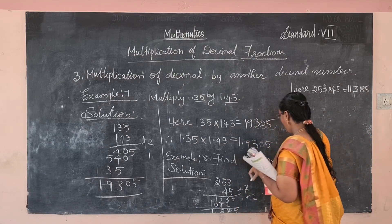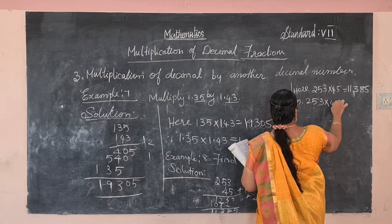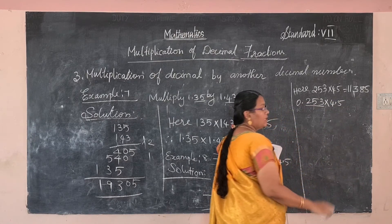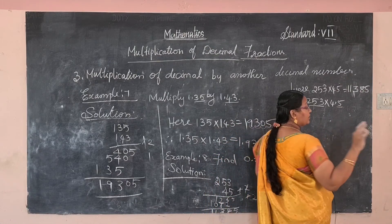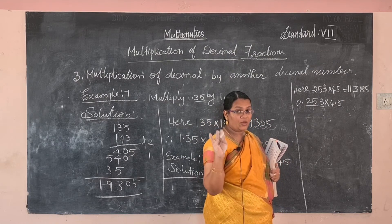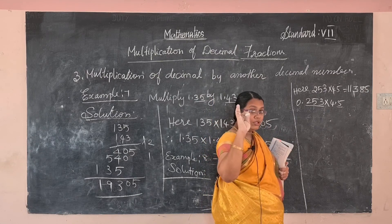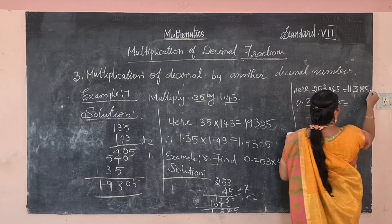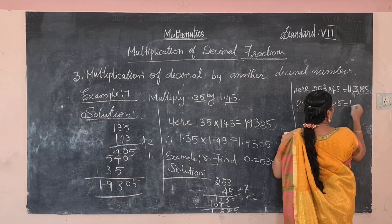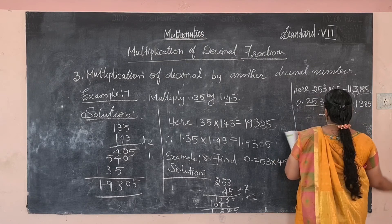We need the decimal value of 0.253 into 4.5. After the decimal point, 0.253 has 3 decimal places and 4.5 has 1 — totally 4 decimal places. The decimal point shifts from the right side by 4 places: one, two, three, four. The answer is 1.1385.